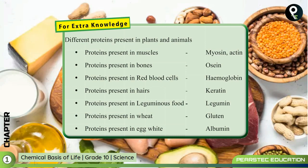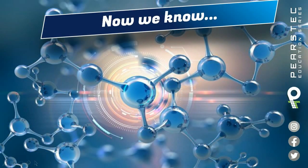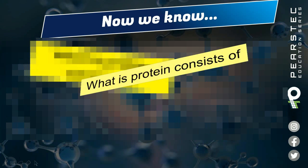Different proteins are present in plants and animals. Protein present in muscles: myosin and actin. Protein present in bones: ossein. Protein present in red blood cells: hemoglobin. Protein present in hair: keratin. Protein present in leguminous food: legumin. Protein present in wheat: gluten. Protein present in egg white: albumin.